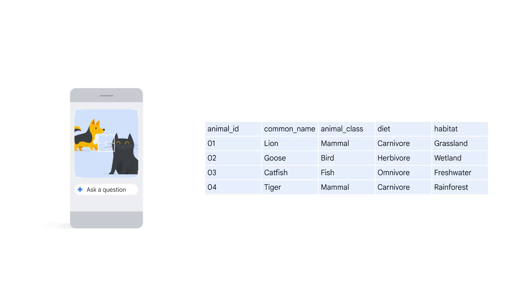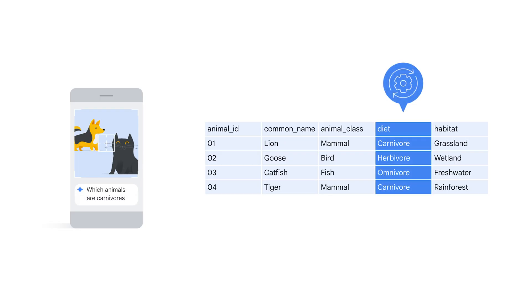For example, imagine you're building a Gen.AI application that can answer questions about animals. Traditionally, you might store information about these animals in a traditional database with rows and columns. When a user asks which animals are carnivores, you would need to write a SQL query to filter the column that lists whether the animal is an herbivore or a carnivore. Although this works, it's limited in its understanding of the relationship between animals.